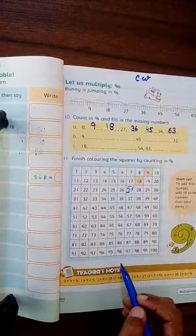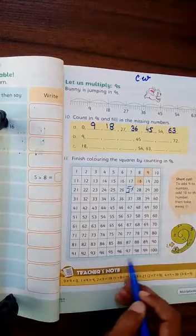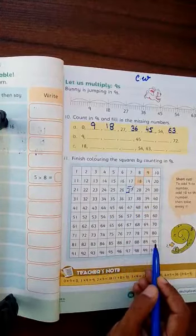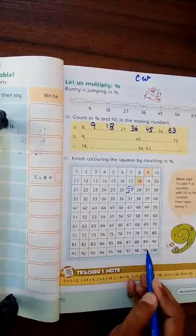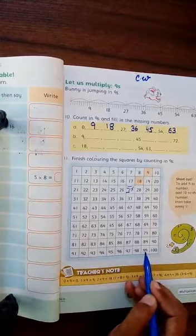9 times 10 is the same. Then you have to look at the 9 table. 9 times 11 is the same. So you have to color it. Okay?